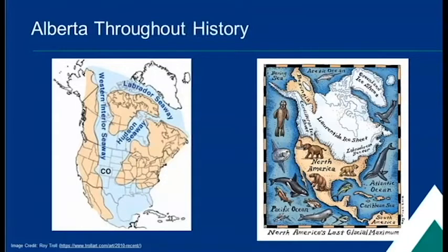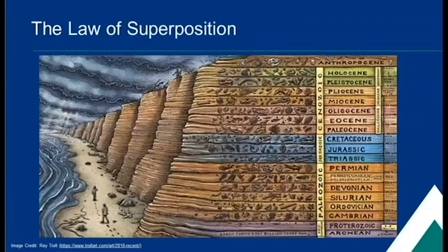The geologic time scale helps us to organize all of the events that happened in Earth's long history. How did we decide what the time scale looks like? We looked at the rocks. If we were to drill down into the Earth and pull out a sample, we would see that there are many different layers of rocks. To picture what one of these core samples would look like, think about what would happen if you stuck a straw into a cake.